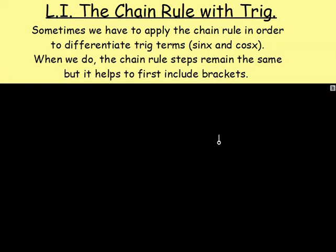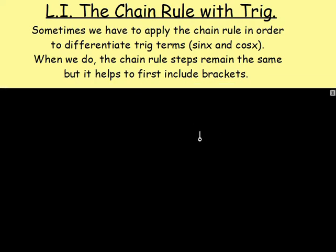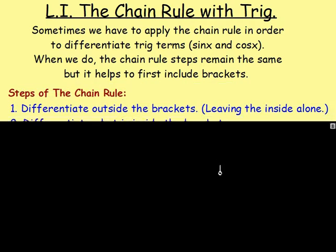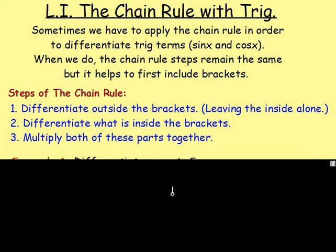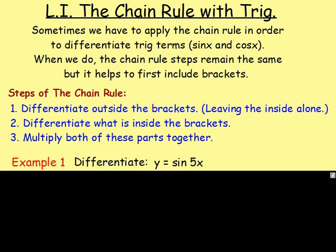Sometimes we have to apply the chain rule in order to differentiate trig terms — the sine x and the cos x that we have been doing. When we do this, the rules remain the exact same, but first it helps to include brackets. These are the rules for using the chain rule: you differentiate outside the brackets, you differentiate inside the brackets, and then you multiply both parts together.